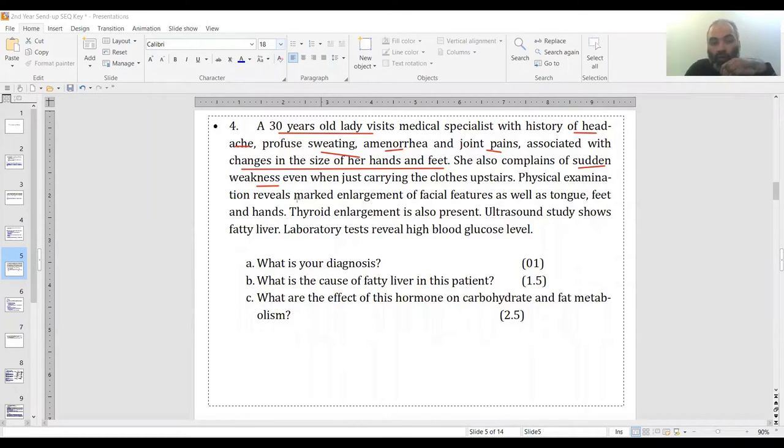Physical examination gives you the main point here: marked enlargement of facial features, as well as tongue, feet, and hands. Thyroid enlargement is there as well. An ultrasound study shows fatty liver. Labs reveal high blood glucose level.